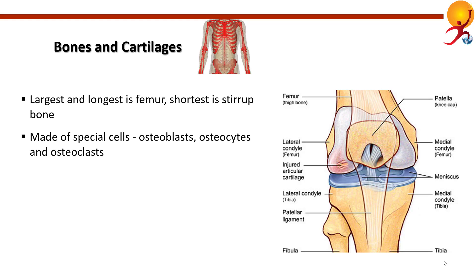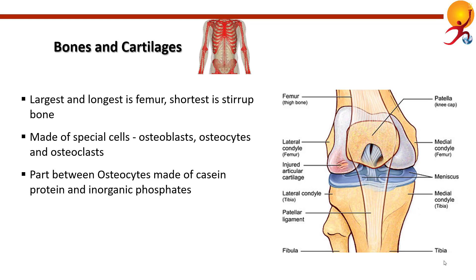Bones are made up of three types of cells called osteoblasts, osteocytes, and osteoclasts. Osteoblasts make the bone while osteoclasts break down and remodel the osseous tissue — they create canals in bones. Osteocytes also provide support. The intercellular material between osteocytes is made up of casein protein and inorganic phosphates.